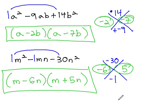Factoring with two variables works exactly like factoring with 1. We just have to account for the second variable on the second term of each factor.